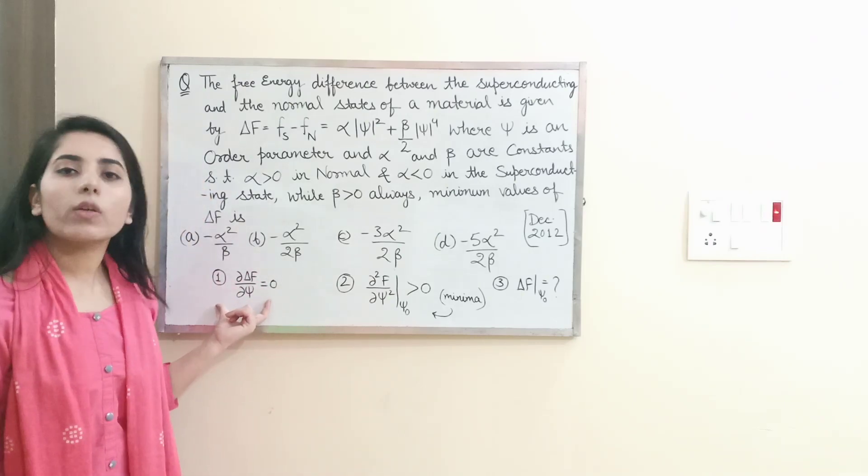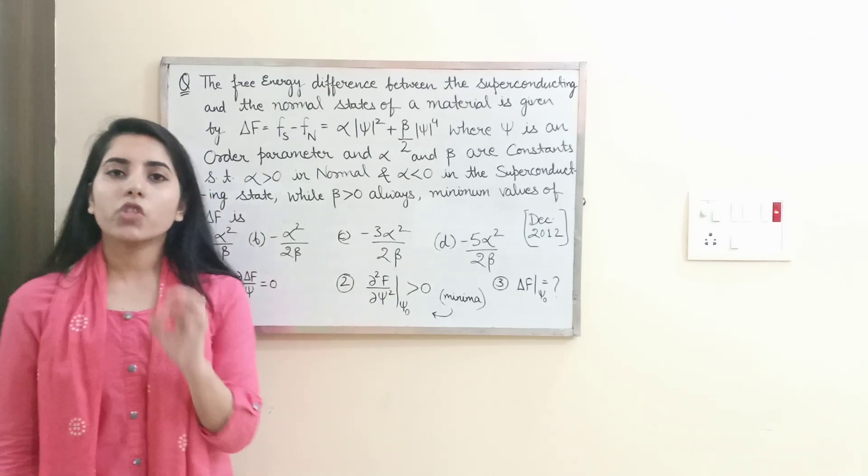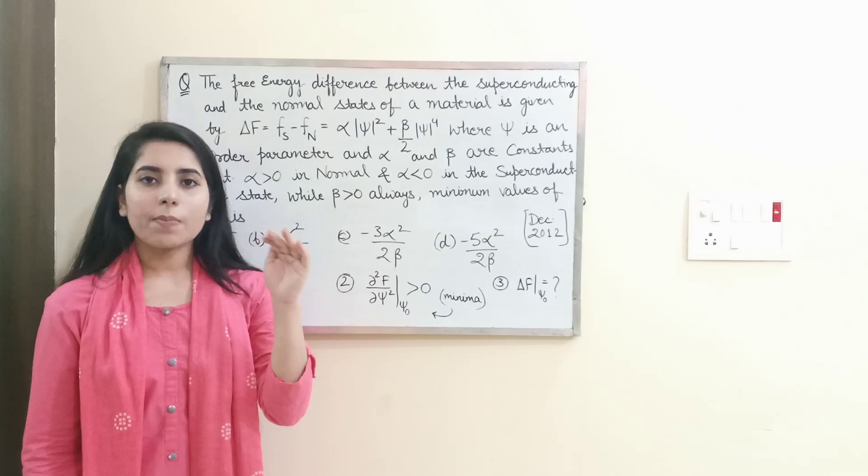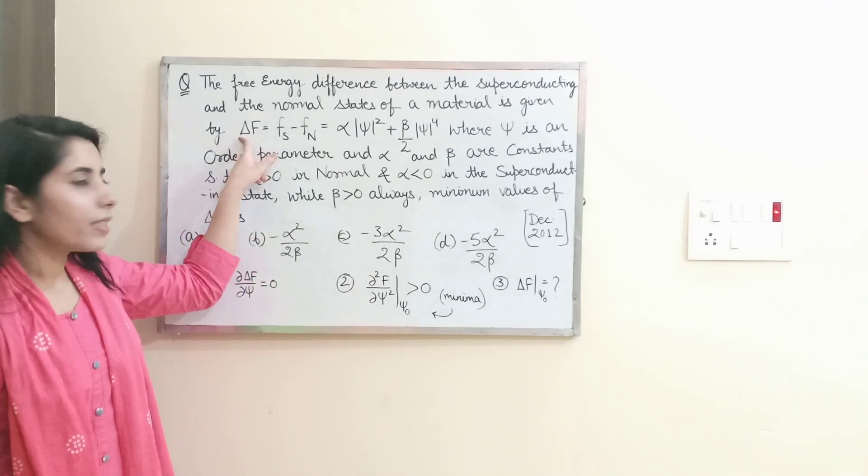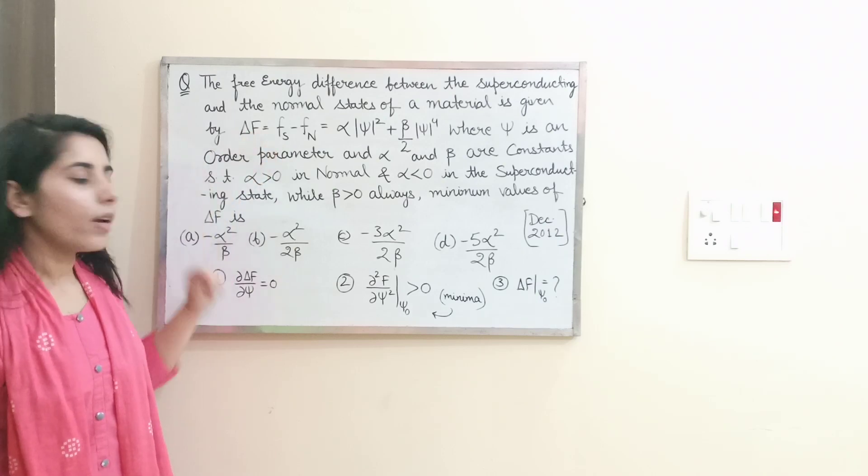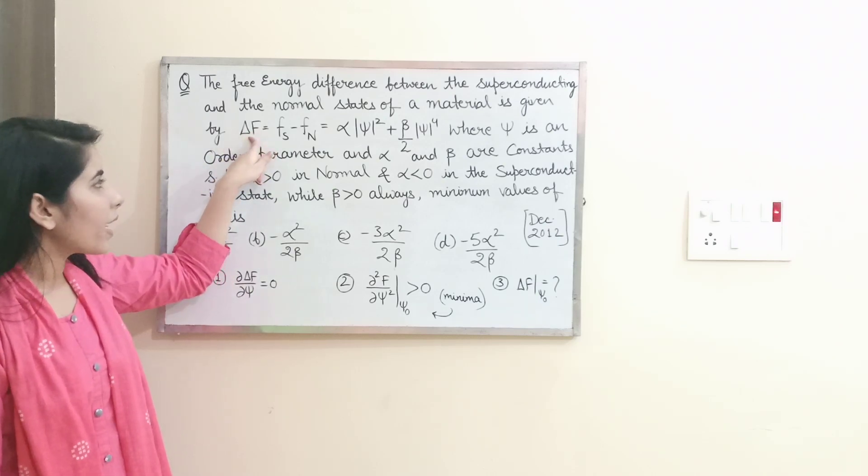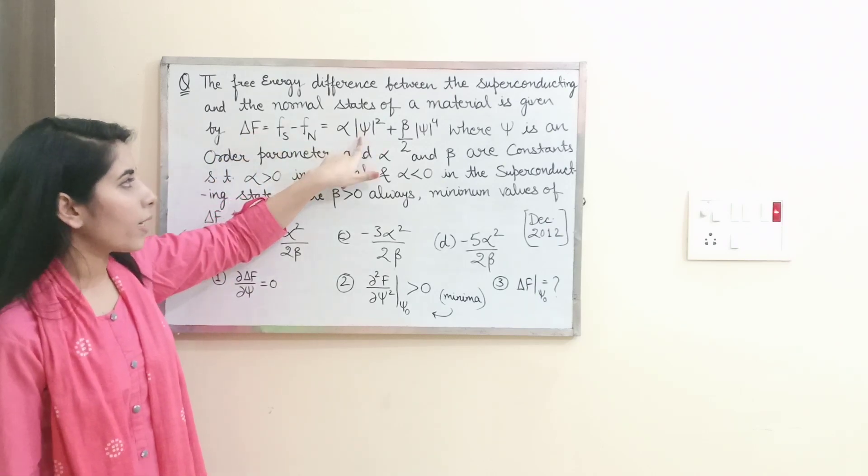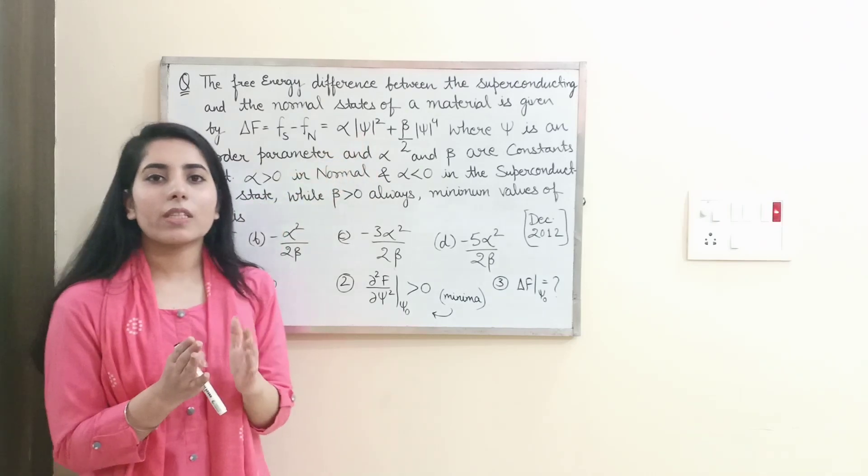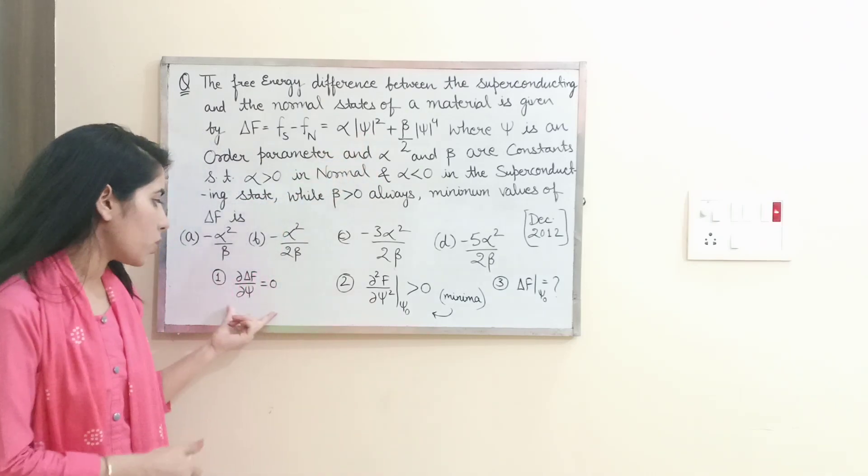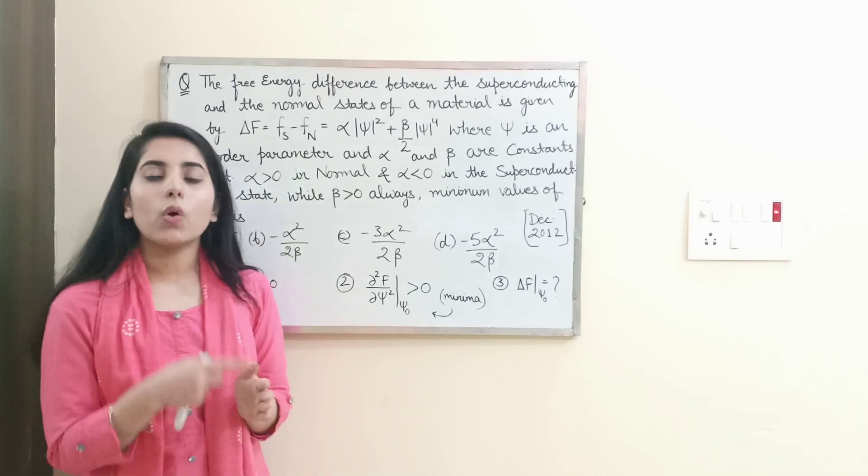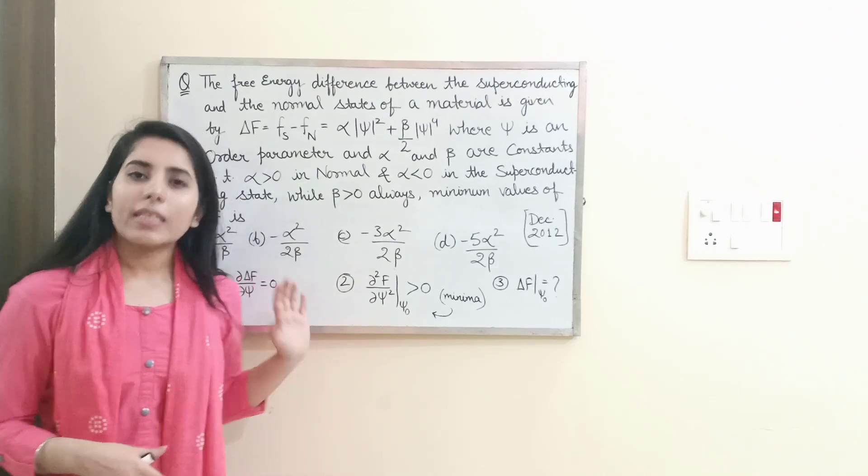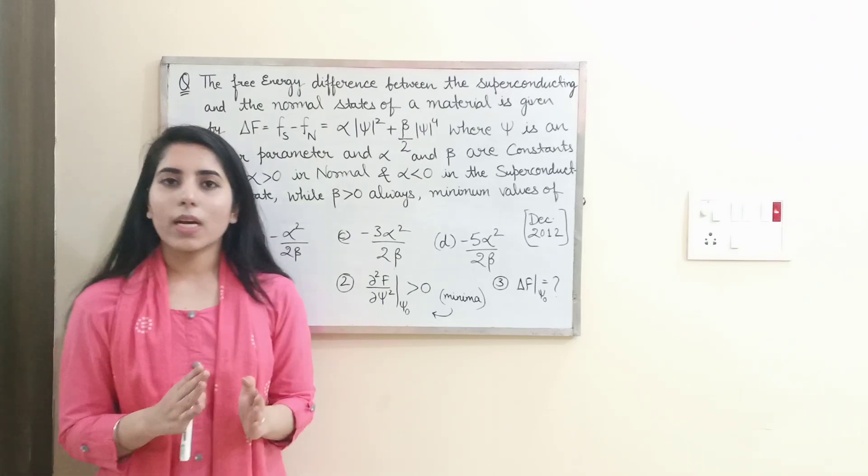Step number one: find the equilibrium points where there are chances that you can get the maxima or minima. So del delta f over del sign, because delta f is a function of sign. With respect to what parameter will you do the differentiation? With respect to sign. After doing this differentiation and equating it with zero, get the value of sign.